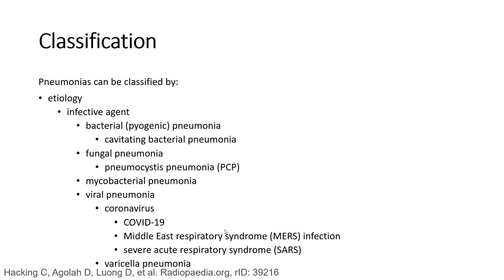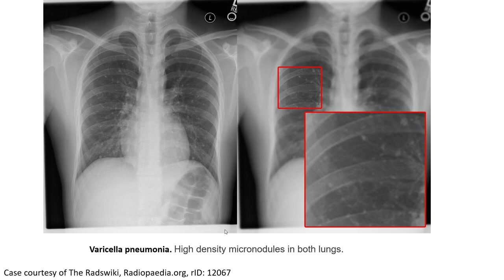Infective agents include bacterial, fungal, and microbial causes, as well as viral pneumonia. This is an example of viral pneumonia caused by varicella, which we call varicella pneumonia.